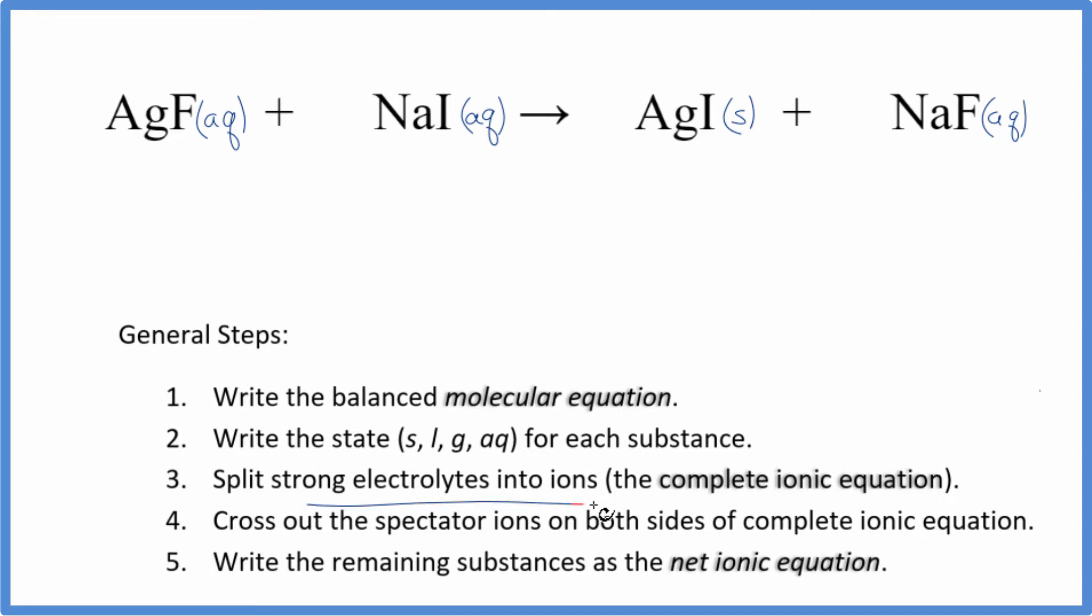we're going to split the strong electrolytes into their ions for the complete ionic equation. Silver always has an ionic charge of 1+. Fluorine is always 1-, so we have Ag+ plus F-. I won't write the states, let's write that at the end.